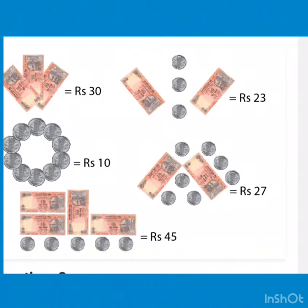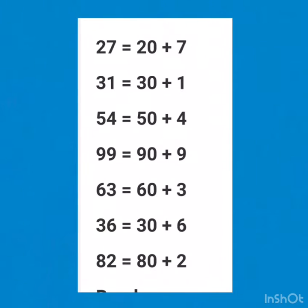Next is: break up these numbers. How will you break these numbers? 27 is equal to 20 plus 7. 31 is equal to 30 plus 1. 54 is equal to 50 plus 4. 99 is equal to 90 plus 9. 63 is equal to 60 plus 3.